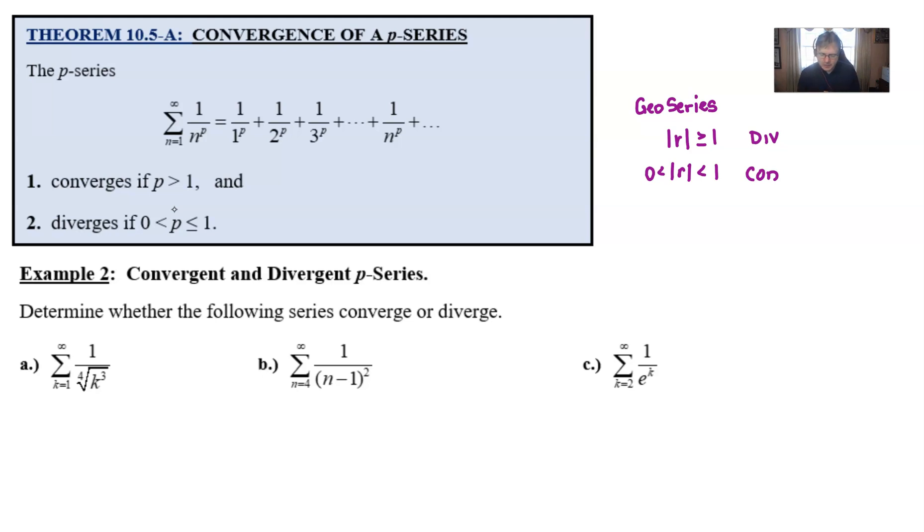Example two, let's determine whether the following series converge or diverge. Part A: summation as k goes from one to infinity of one over the fourth root of k cubed. If you're not a fan of square roots, and let's be straightforward, I'm not. I don't think square roots play nicely with calculus at all. So we could call this one over k to the three-fourths power.